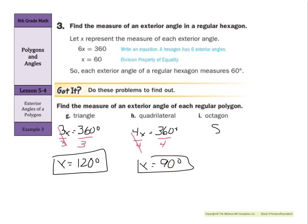Octagon, eight sides, eight exterior angles, that are all going to add up to 360 degrees. Divide by 8, and x is going to be 45 degrees.